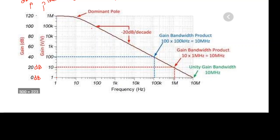The roll-off is minus 20 dB per decade — the gain is dropping at that rate. At the point where gain is 100 and frequency is 100 kHz, the product is 10 MHz. Similarly, where the gain is 10 and frequency is 1 MHz, the product is again 10 MHz. So as stated earlier, the product of gain and bandwidth remains constant — the gain bandwidth product is constant.